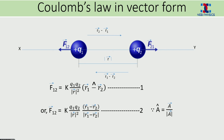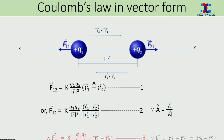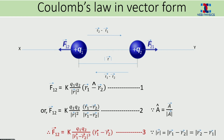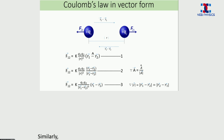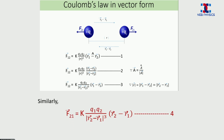Now, by replacing the modulus of R vector by the modulus of R1 vector minus R2 vector, equation 2 can be written as equation 3, which is our final expression for F1,2 vector. Similarly, F2,1 vector can be written as equation 4, where we have just replaced R1 vector minus R2 vector by R2 vector minus R1 vector, and the modulus of R1 vector minus R2 vector by the modulus of R2 vector minus R1 vector.